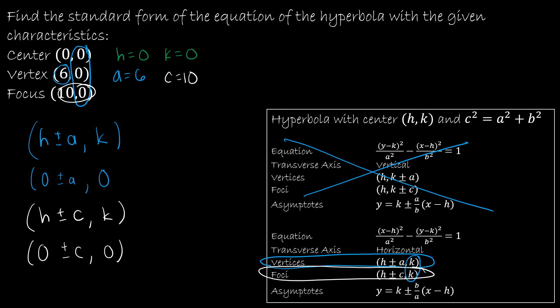And so now the only thing I'm missing is B, which I can find using this expression. C squared is equal to A squared plus B squared. I'm just going to write that as 100. And that means 64 is B squared. And that means 8 is B.